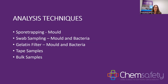Then we have swab sampling, which we can use to identify any visible mould we see, but we mainly use it on surfaces where we cannot see visible mould because it can help give an indication of whether the soft furnishings or general surfaces in a room have been contaminated by airborne spores. You can also look for bacteria, which is really helpful to give an overall picture of the air quality and cleanliness of the surfaces.